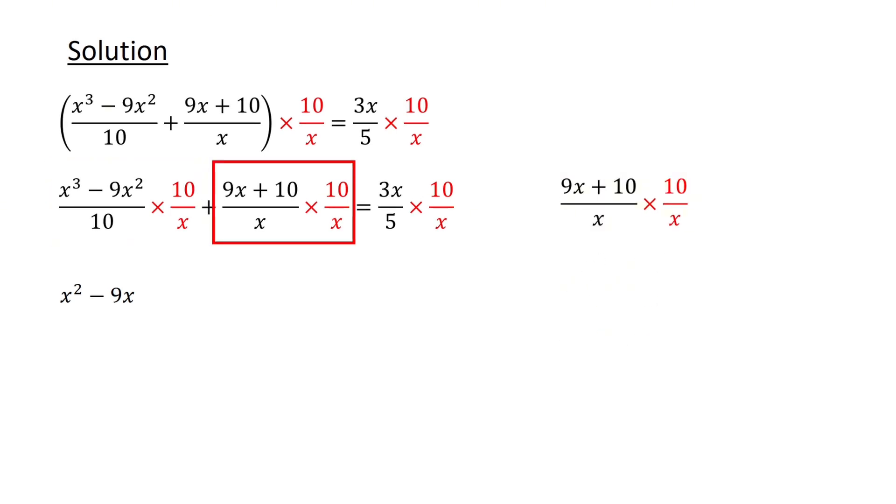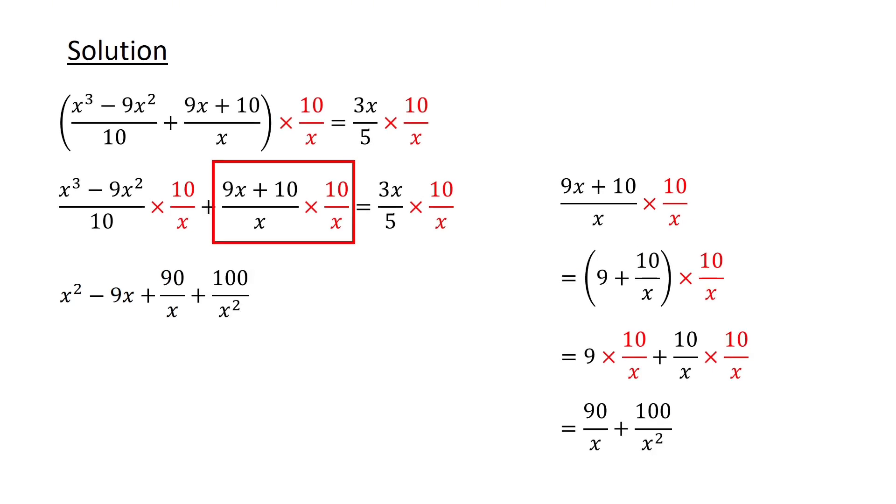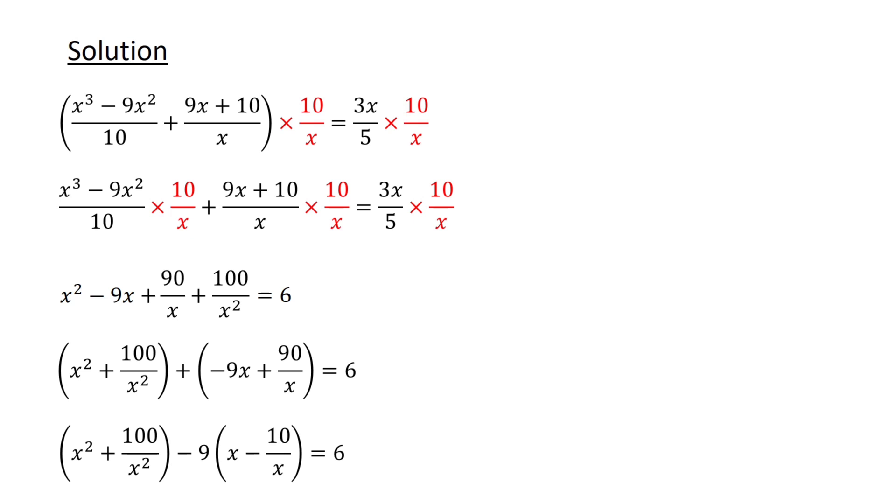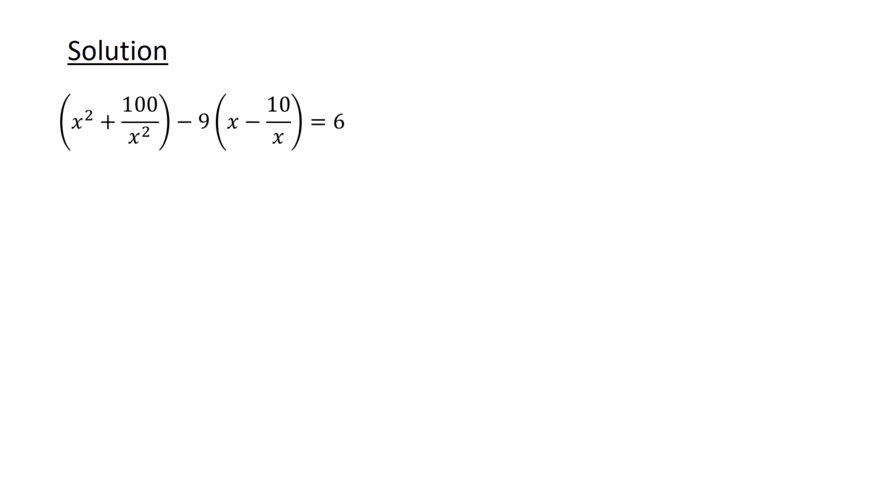In the second term, we rewrite the fraction as 9 plus 10 over x and apply the distributive property again to obtain 90 over x plus 100 over x squared. In the third term, the x cancel each other out, and we get 3 over 5 times 10, which equals 6. Next, we group x squared with 100 over x squared and minus 9x with 90 over x. After factoring out minus 9 from the second group, our equation becomes x squared plus 100 over x squared minus 9 times x minus 10 over x equals 6.